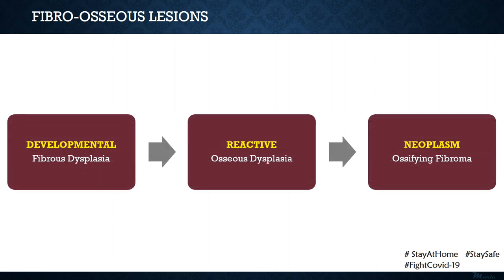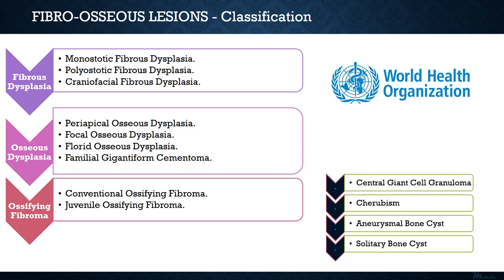There are three main types of fibro-osseous lesions, categorized as developmental, reactive, or neoplastic in nature. The developmental form is fibrous dysplasia, the reactive form is osseous dysplasia, and the neoplastic form is ossifying fibroma. We will be following the 2005 WHO classification. Under this classification, other pathologies grouped under fibro-osseous lesions include central giant cell granuloma, cherubism, aneurysmal bone cyst, and solitary bone cyst.